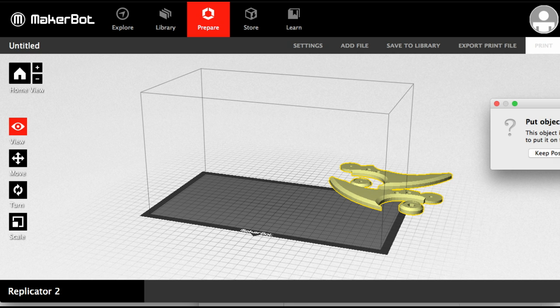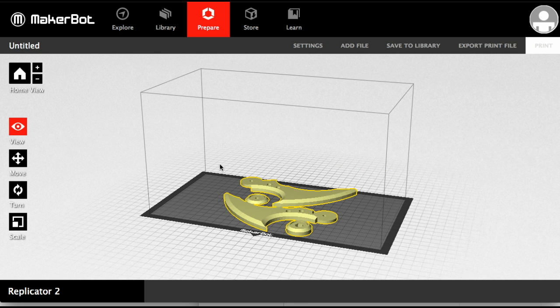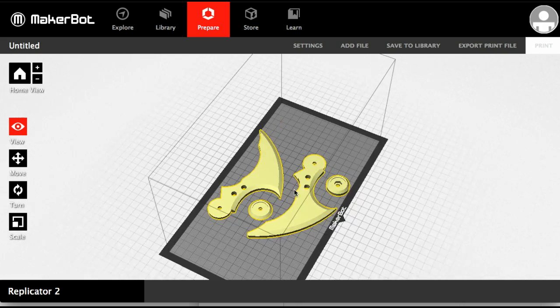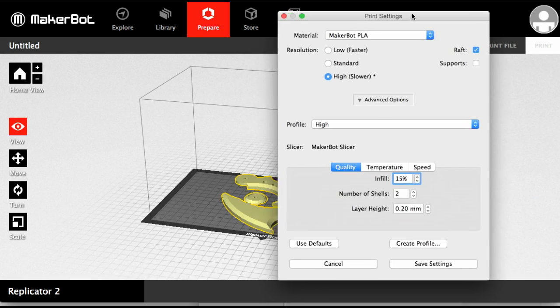From there, it's simply a matter of bringing it into the slicing program, the MakerBot slicing program, and determining how good a quality we want this. Now, I am going to print this with rafts because I like using a raft as it keeps the build stuck to the plate without it coming loose, as often happens.